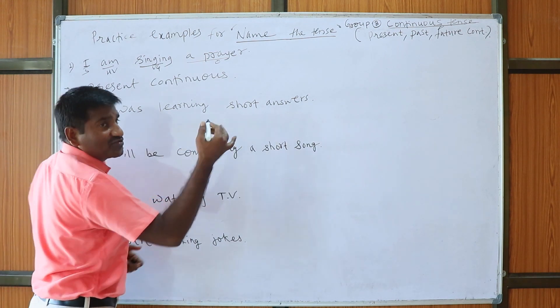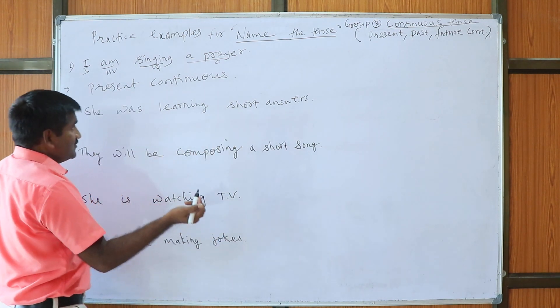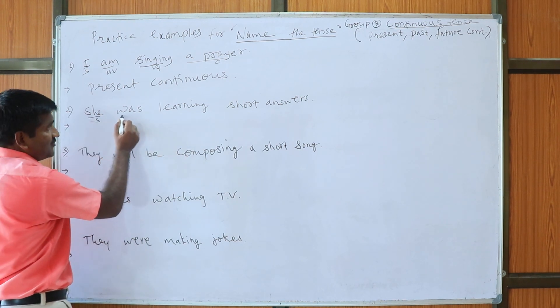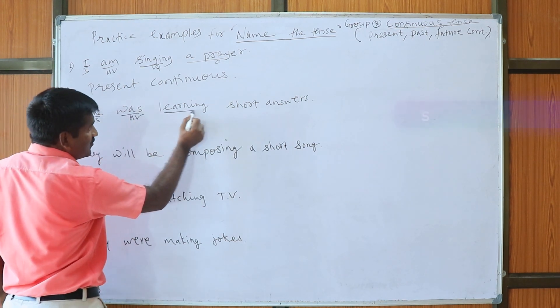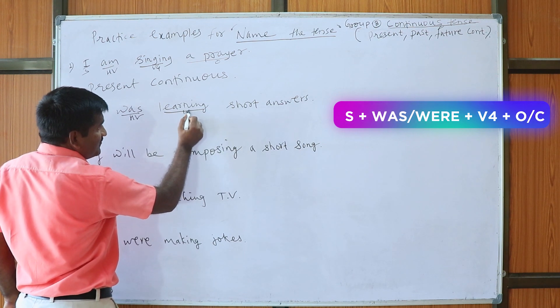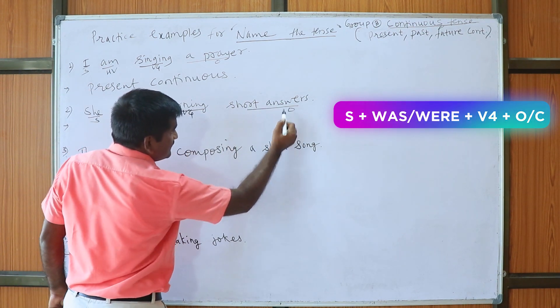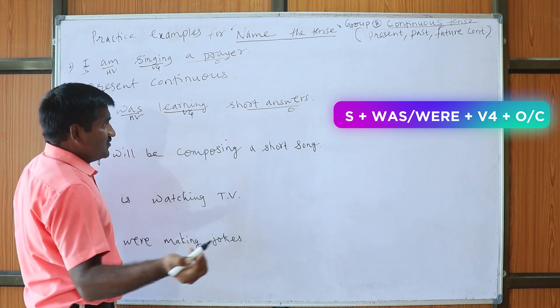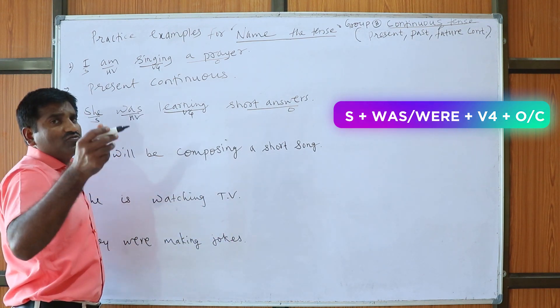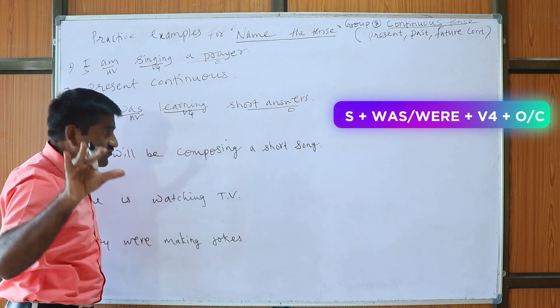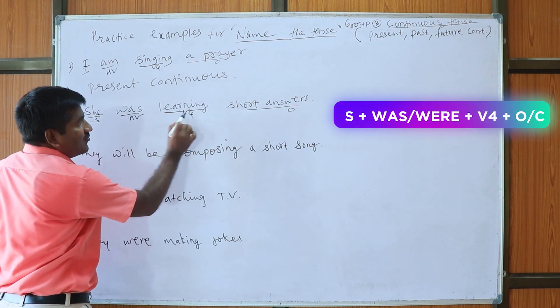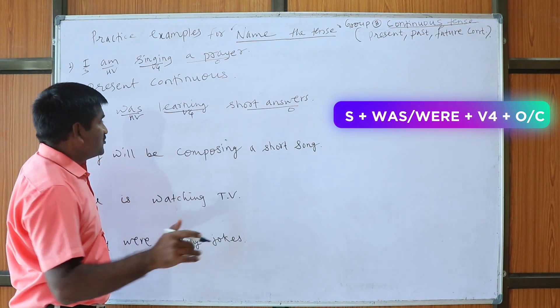She was learning short answers. So here, what is she? She is called as subject. What is was? Helping verb. This is what? Ing is added. So it means that it's V4 or V1 plus ing. Then short answers, it's an object. So, but if you want to study the name the tense or change the tense, we have to focus on helping verb and main verb. So, the formula.